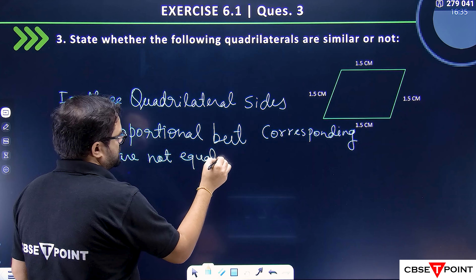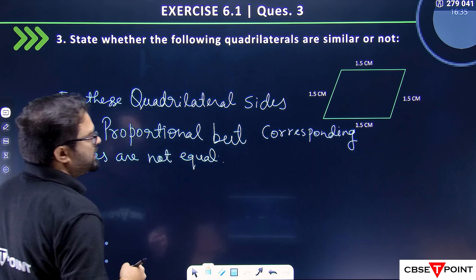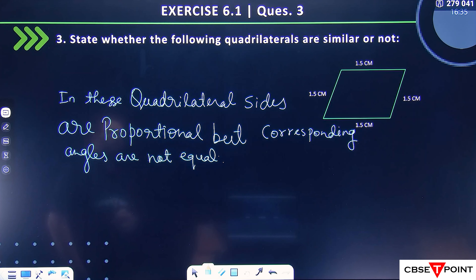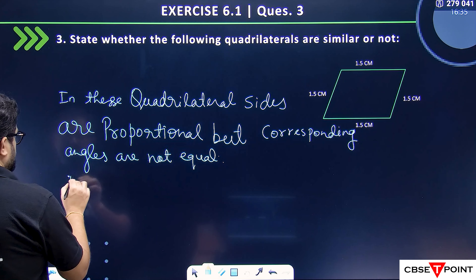Corresponding angles are not equal. So these quadrilaterals are not similar. All questions are complete — you can note them down. If there is a one-mark question, definitely you should know this from NCRT. We have completed this exercise.